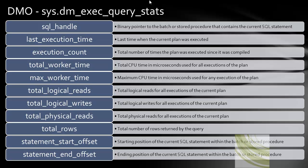Let's look at the columns. SQL handle is a binary pointer to the batch or procedure that contains the current SQL statement — an improved method over DBCC input buffer used in SQL 2000. Last execution time tracks when the current plan or SQL statement was last executed. Execution count is the total number of times the plan was executed since it was compiled. Total worker time is the total CPU time in microseconds used for all executions of the plan.